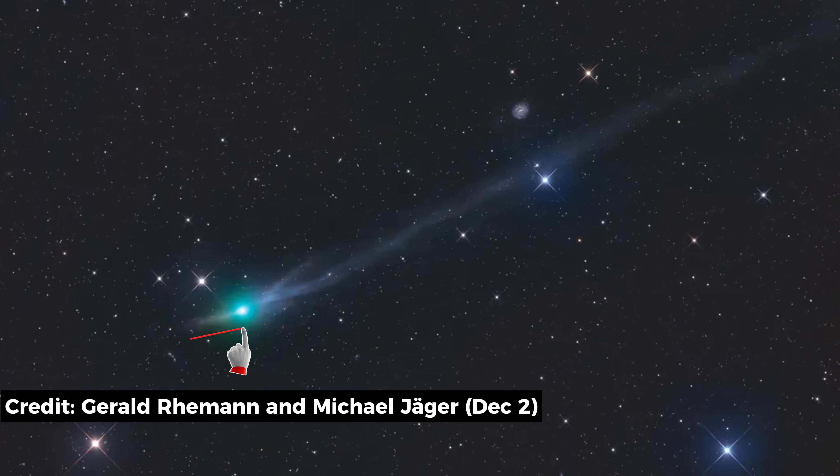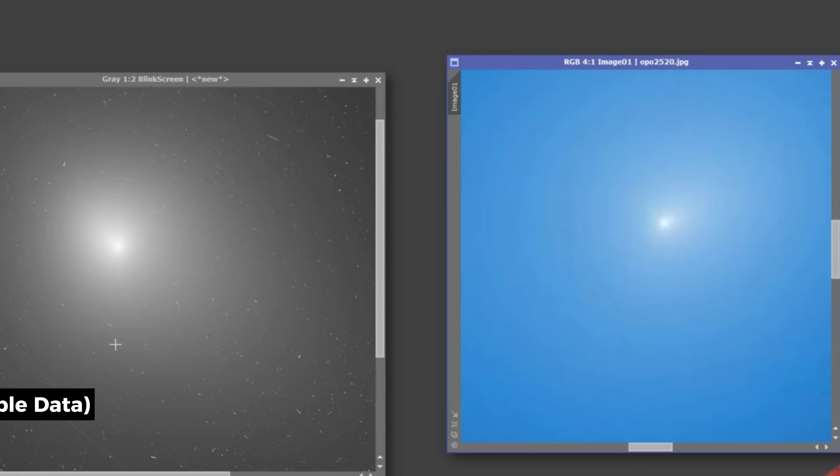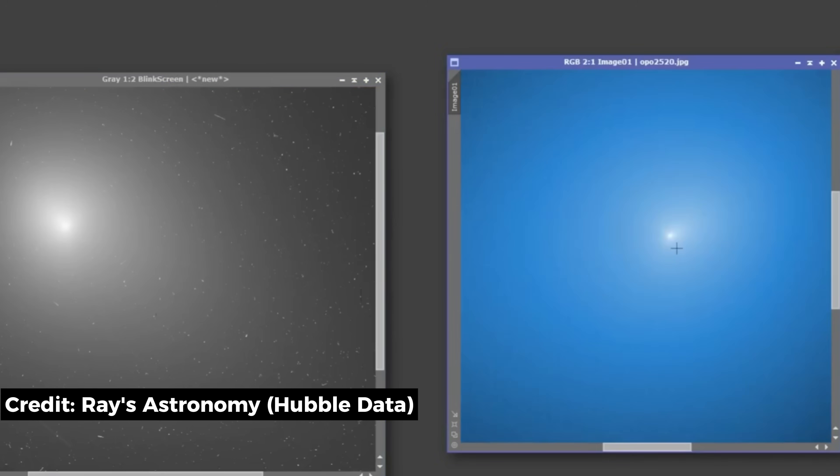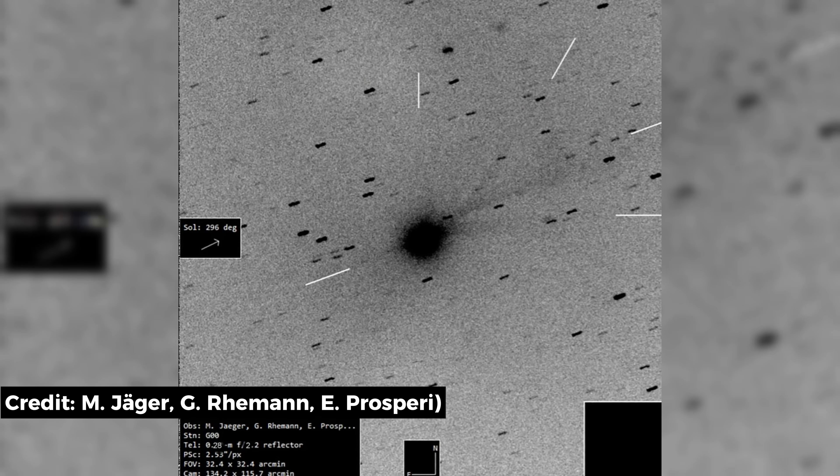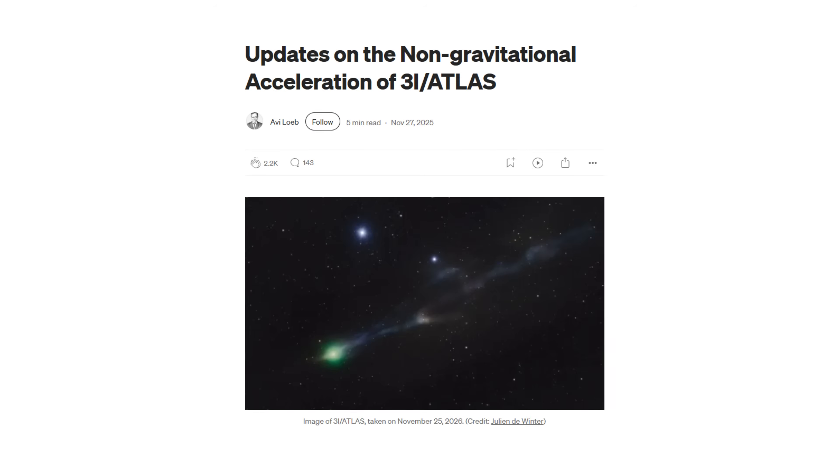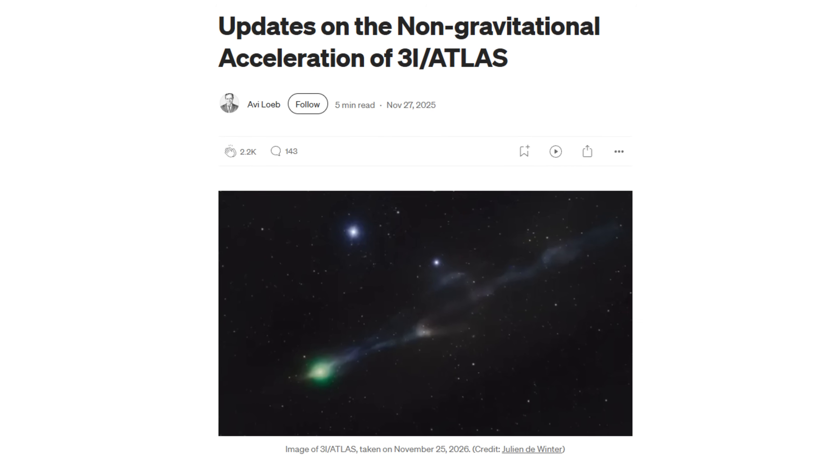A sun-facing anti-tail extending tens of thousands of kilometers. A coma shaped in the wrong direction, glowing brightest toward the sun rather than away from it. Jets and fragment-like objects behaving as if gravity is irrelevant, and an accelerating nucleus that refuses to follow a gravitational path alone.